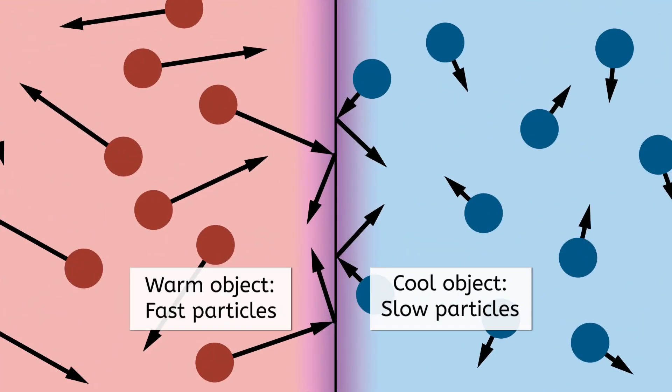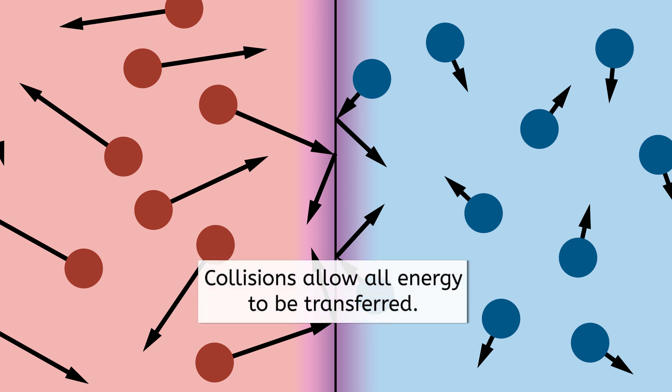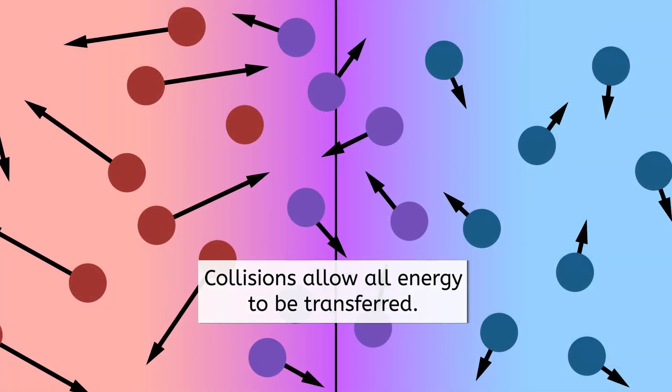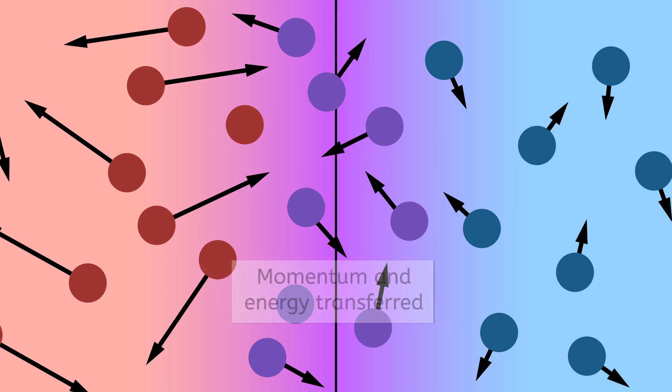When fast moving particles of a warmer object come into contact with slow moving particles of a cooler object, collisions between particles where the two surfaces touch allow energy to be transferred. The faster particles lose energy as some of their momentum is transferred to the slower particles.